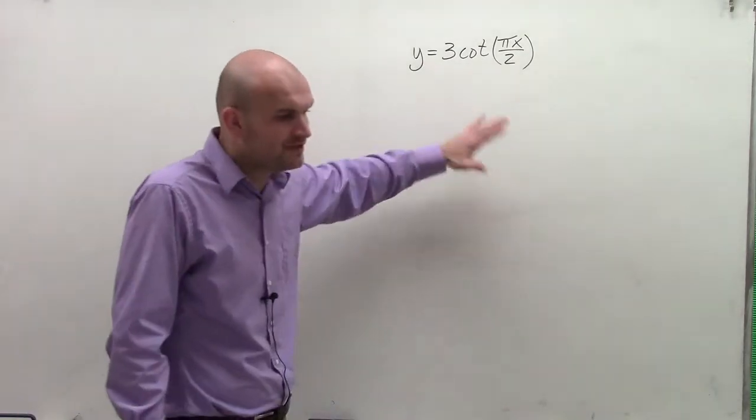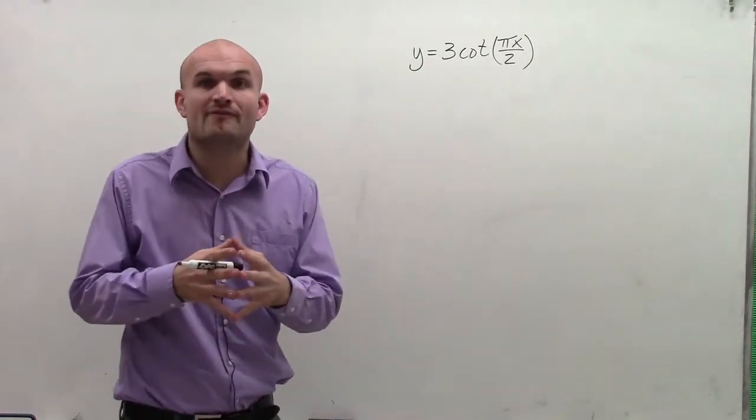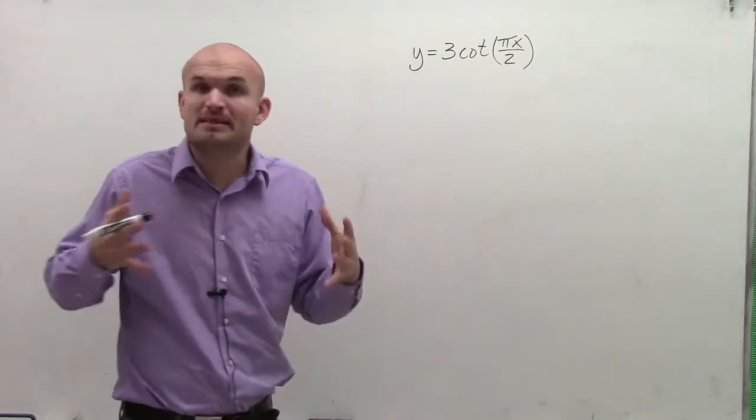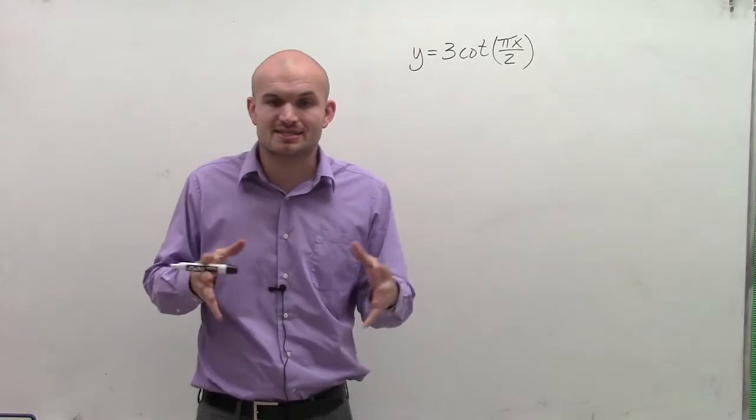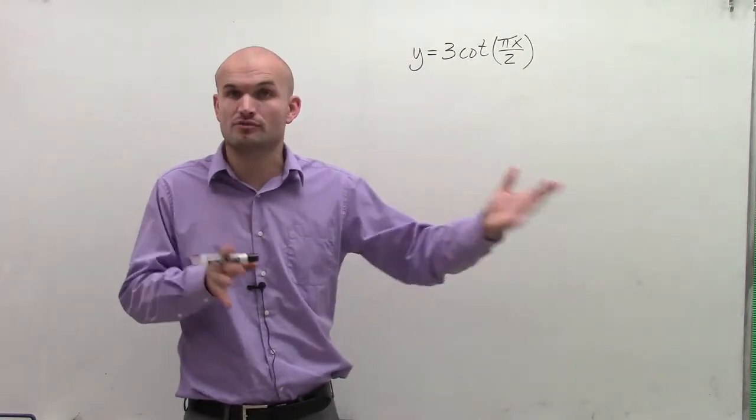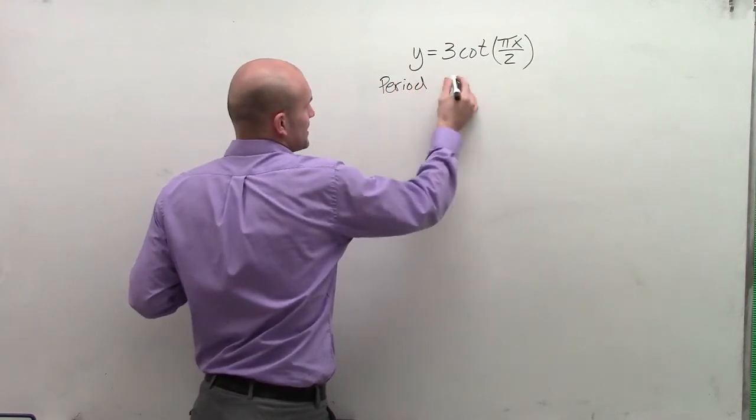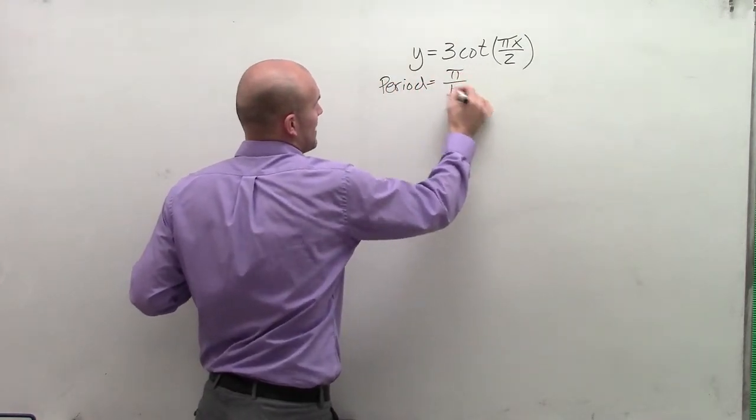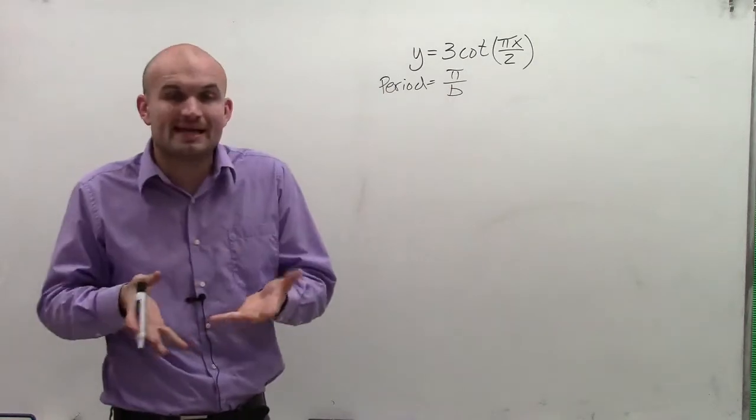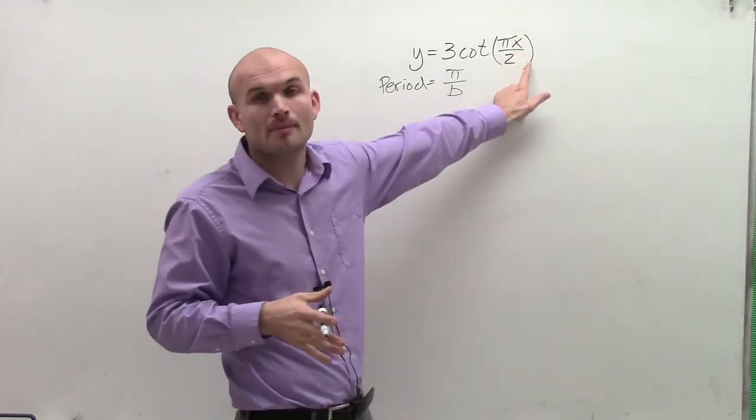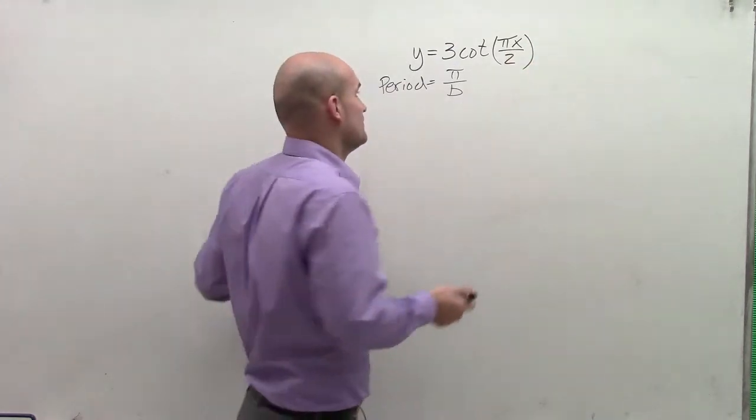When graphing the cotangent, we're going to want to find a couple of key important values. The first important value is the period, which is the distance it's going to take for our function to repeat itself. When finding the period of the cotangent function, we take pi and divide it by b. Remember, b is your coefficient of your variable inside your function.